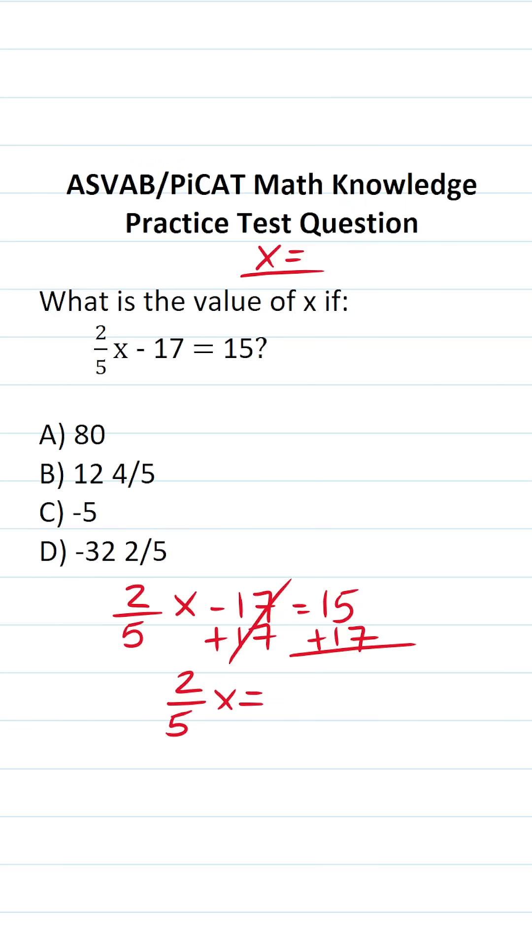what is 15 plus 17? Well, 5 plus 7 is 2, carry 1. 1 plus 1 plus 1 is 3.